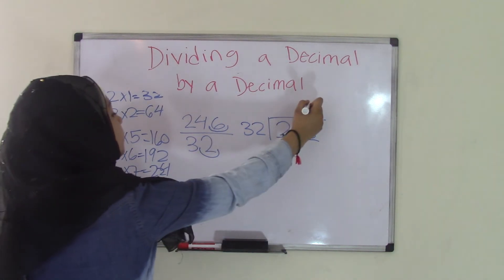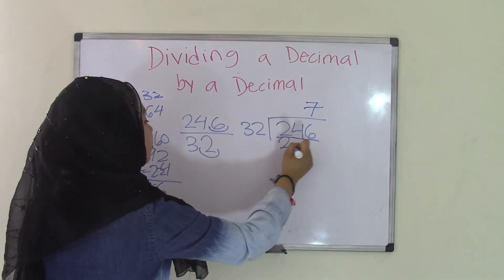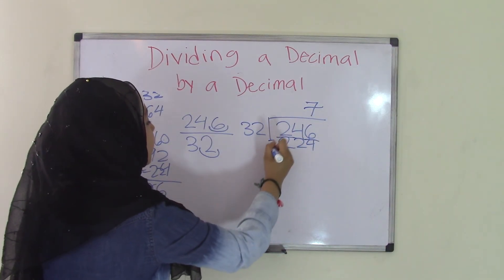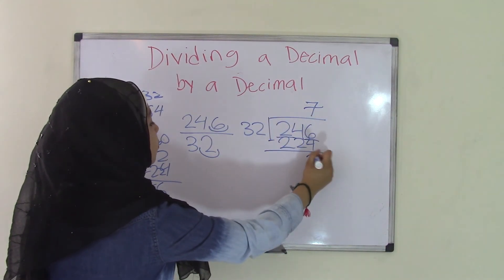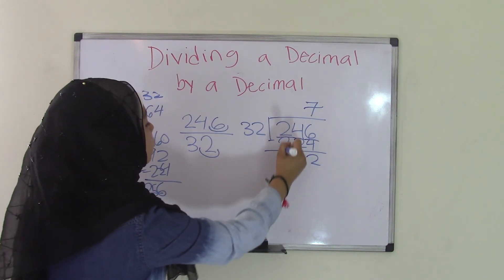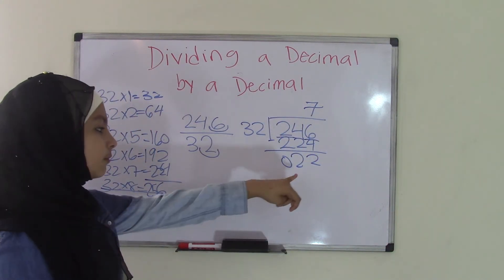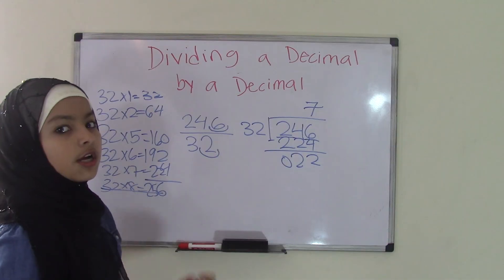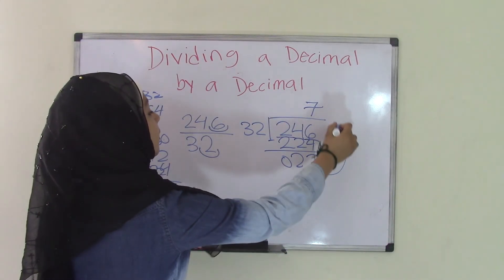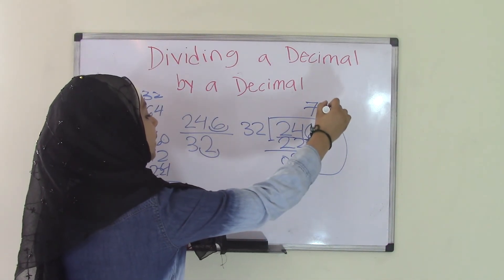So 32 times 7 equals 224. Subtract. 6 minus 4 equals 2. 4 minus 2 equals 2. 2 minus 2 equals 0. We cannot divide 22 divided by 32. So what we're going to have to do is bring this up here, add an R for the remainder of 22.